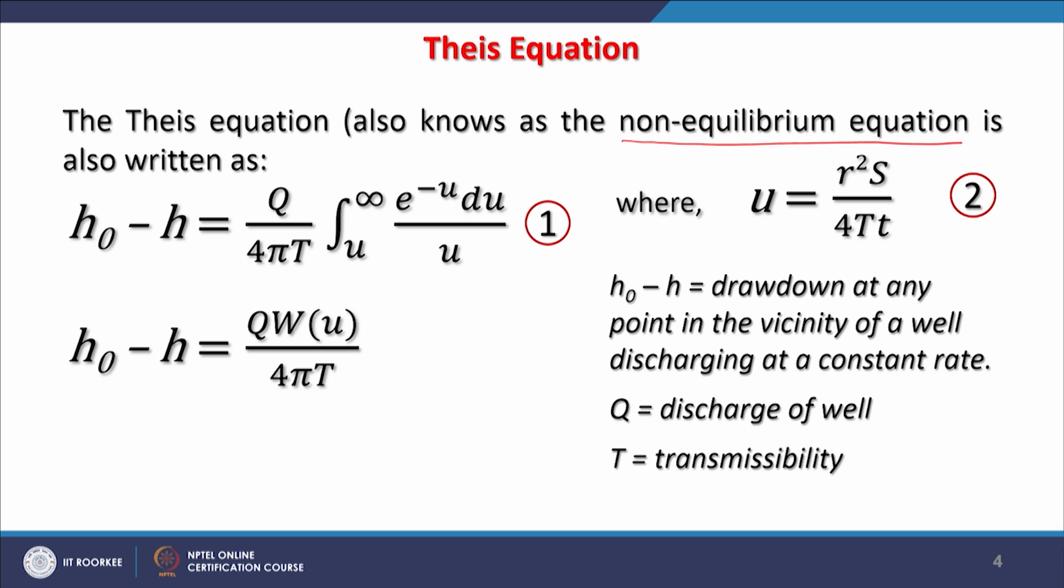This is written as h₂-h = Q/(4πT) ∫(u to ∞) e^(-u)du/u, where u = r²S/(4Tt). We know that h₂-h₁ is the drawdown at any point in the vicinity of a well discharging at a constant rate. Q is the discharge of the well, T is the transmissibility.